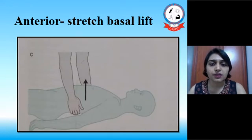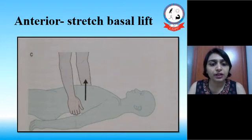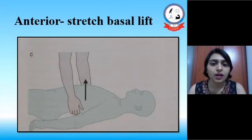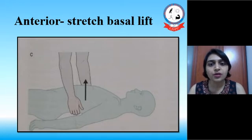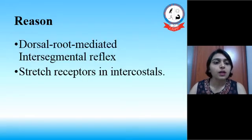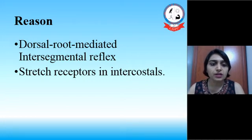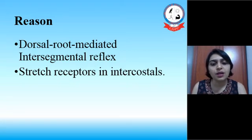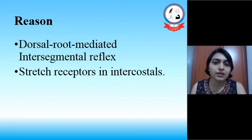Here is the technique as shown. We have to lift the lower ribs firmly and gently upward and maintain that pressure for some time, which will give pressure and stretch to the lateral and posterior area of the rib. We may then see an increase in respiratory movement in those areas. The reason for this is the dorsal root mediated intersegmental reflex and stretch receptors in the intercostal muscles, which may give an epigastric raise due to reflex.